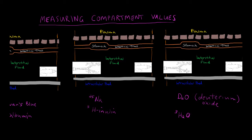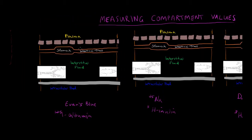We can calculate that using mass balance. For example, Evans Blue is a dye that has a high affinity for serum albumin. Albumin is a large protein, and while capillaries allow communication with the interstitial fluid, the pores are not large enough for albumin to pass through. So the capillaries are not permeable to albumin and proteins in general.